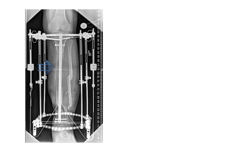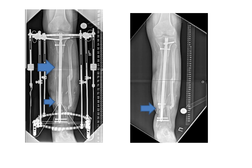Here you can see the advancement, with all the proximal bone formation noted, and the transport segment moving in a distal direction towards the ankle. And in this picture, you can see that docking has occurred, and now we can remove the external fixator.